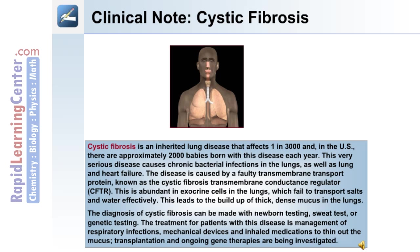Cystic fibrosis is an inherited lung disease that affects one in 3,000 people, and in the United States approximately 2,000 babies are born with this disease each year. This very serious disease causes chronic bacterial infections in the lungs, as well as lung and heart failure. The disease is caused by a faulty transmembrane transport protein known as the cystic fibrosis transmembrane conductance regulator, or CFTR, which is abundant in exocrine cells in the lungs.